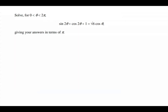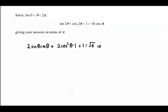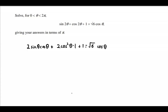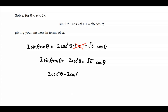The first thing we're going to do is replace sine 2 theta with 2 sine theta cos theta, and cos 2 theta with 2 cos squared theta minus 1. Now clearly the minus 1 and the 1 are going to cancel, so we're left with 2 sine theta cos theta plus 2 cos squared theta is equal to root 6 cos theta. Rearranging gives us 2 cos squared theta plus 2 sine theta cos theta minus root 6 cos theta is equal to 0.